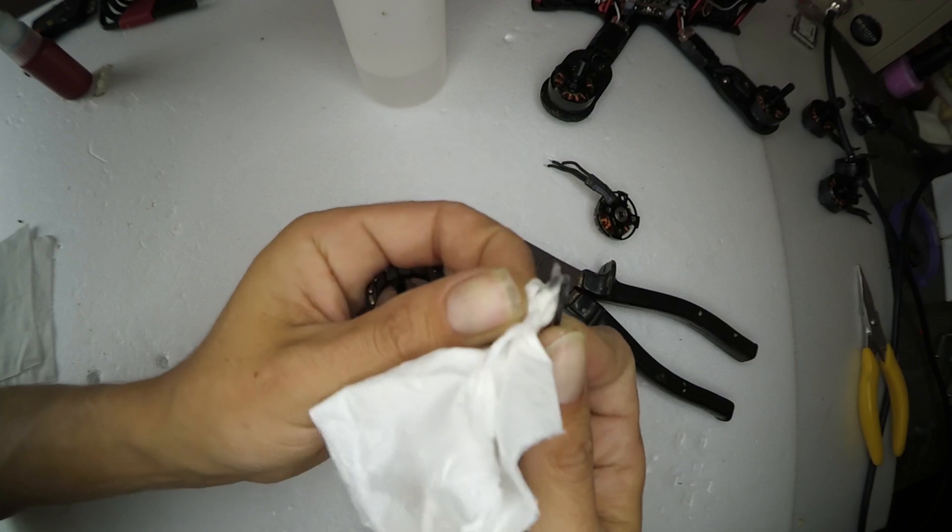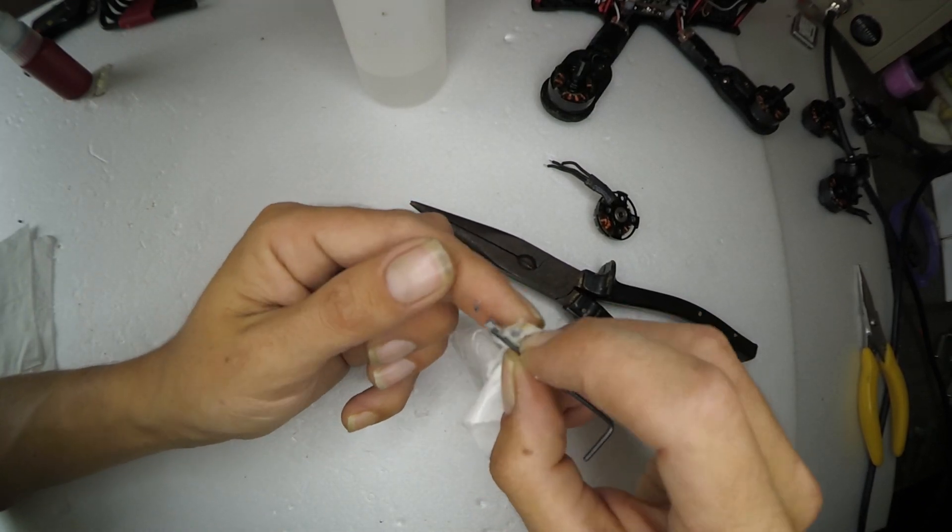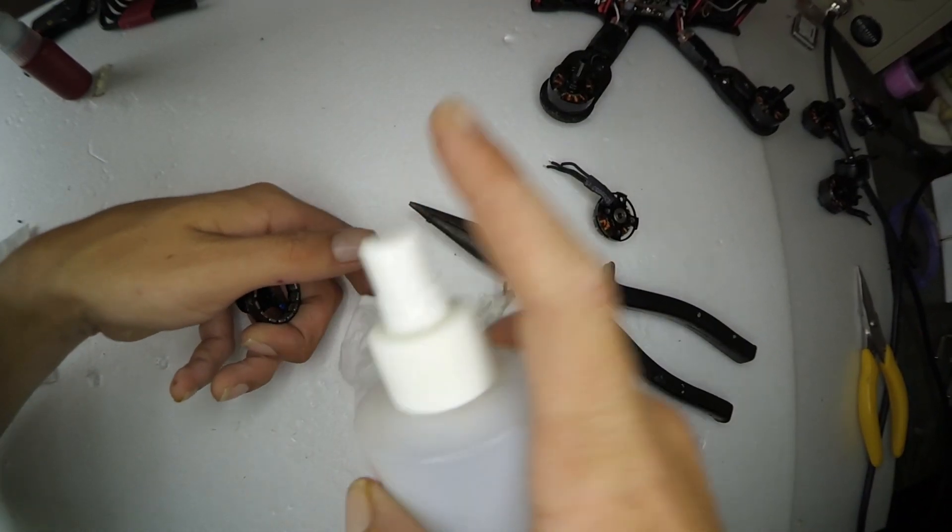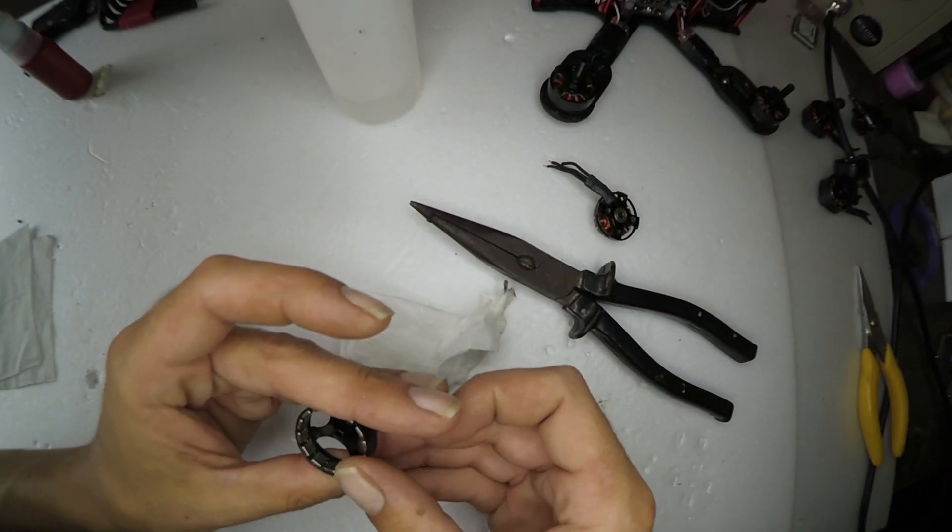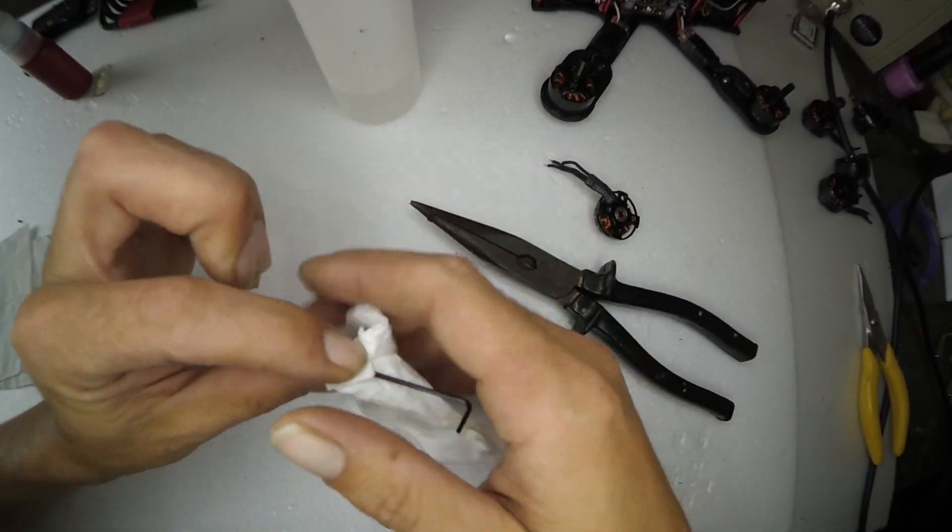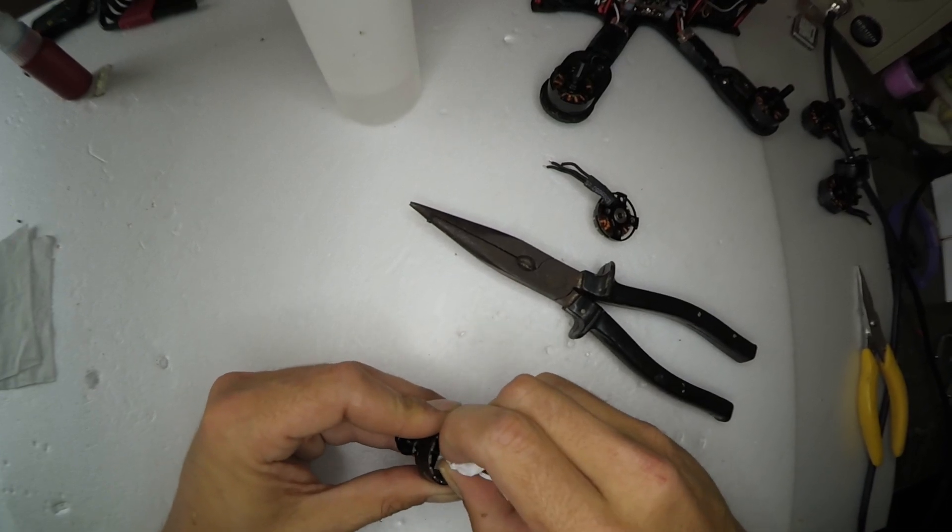See all that crap? That will stop the Loctite from sealing if we don't get that off. So I mean, you can put the best Loctite in the world into that, and it just, it wouldn't seal properly if you've got all that grease and gunk in there. So, it's a very important step is this cleaning. You have to do it. You really do.